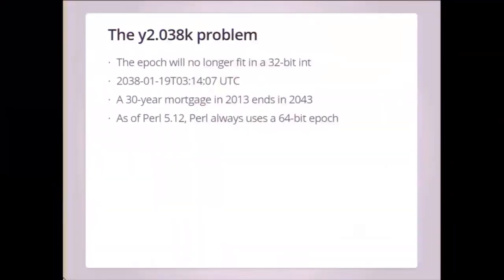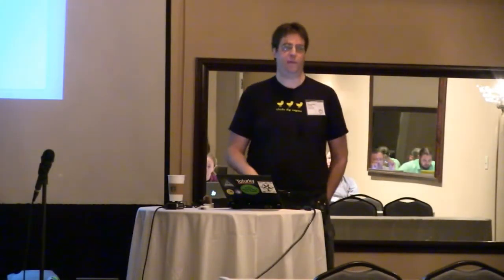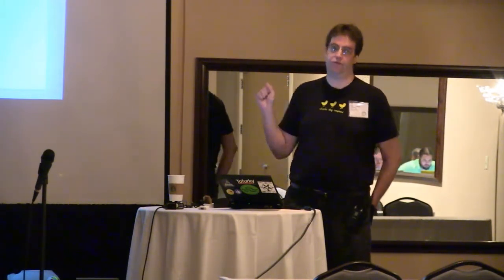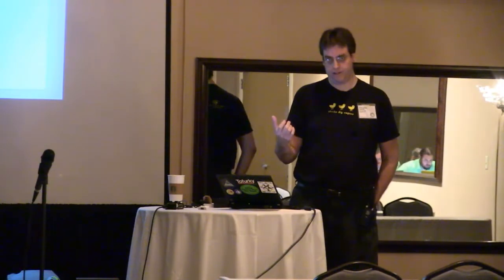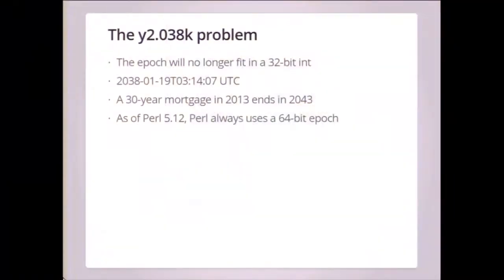There's also a Y2.038K problem, which will happen in year 2038. The Epoch won't fit in a 32-bit integer at that point. On Unix systems Epochs are represented as signed 32-bit integers, at least on 32-bit systems. If you're using Epochs to calculate mortgages on a 32-bit system, you were already screwed in 2008. Nowadays most new systems are 64-bit. Perl always uses a 64-bit Epoch internally, which is very nice. This is probably more of an issue for embedded systems, which will probably continue to be 32-bit for a while.